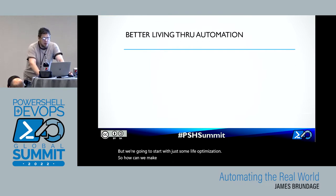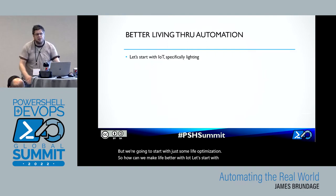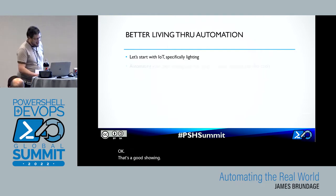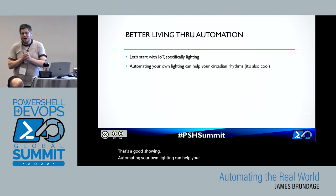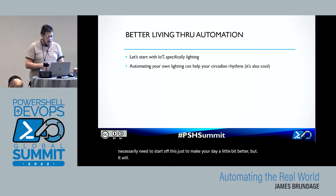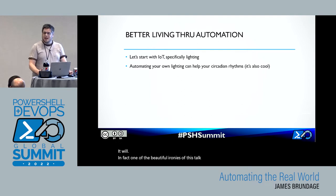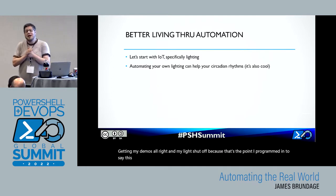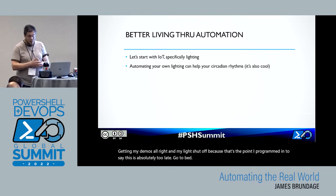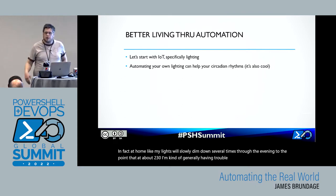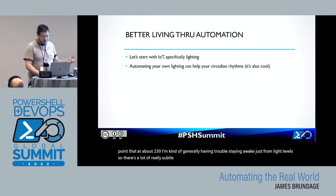So, how can we make life better with IoT? Let's start with lighting. How many people have smart lights? Automating your own lighting can help your circadian rhythms — it is also cool. One of the beautiful ironies of this talk and its demo prep is that I was hoisted on my own petard working at 2:30 in the morning, getting my demos right, and my lights shut off because that's the point I programmed to say 'this is absolutely too late, go to bed.' At home, my lights will slowly dim down several times through the evening, so by about 2:30 I'm generally having trouble staying awake just from light levels.